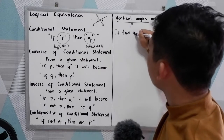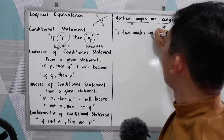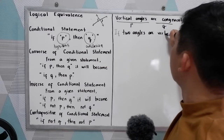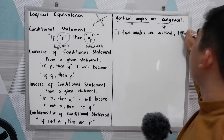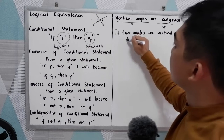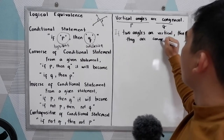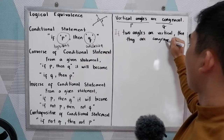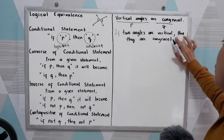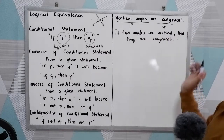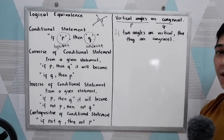So we can write: 'If two angles are vertical, then they are congruent.' That is the conditional statement.